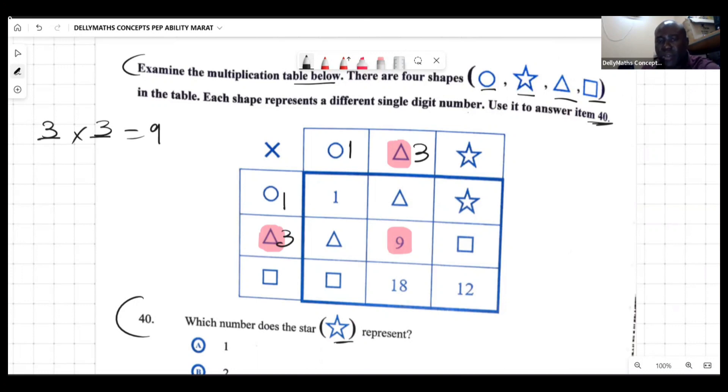From this we are able to fill out more things. This is a three, this is a three, so I'm filling out the table.